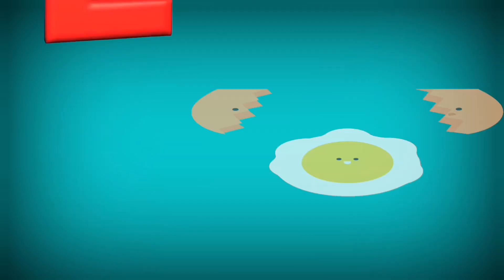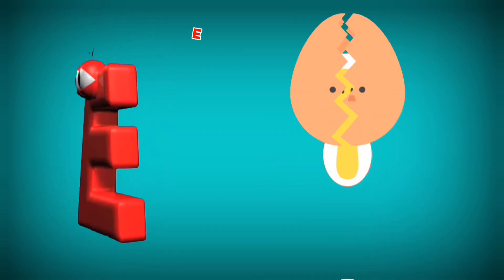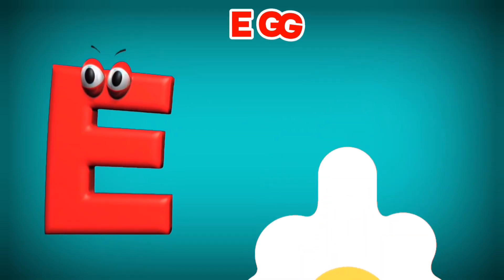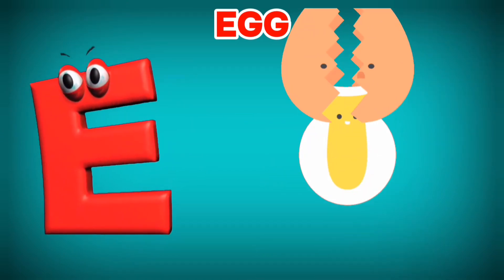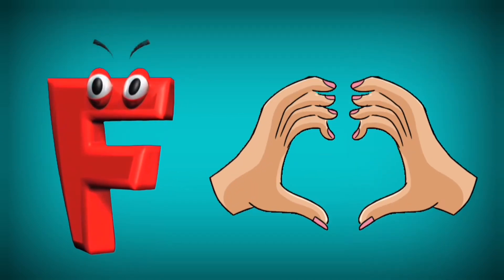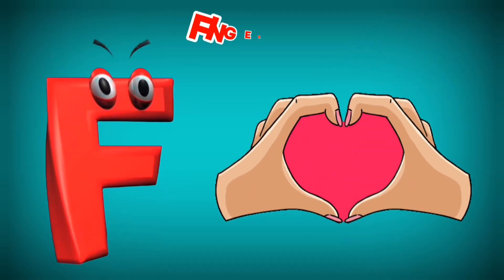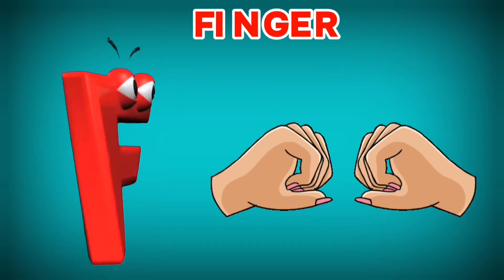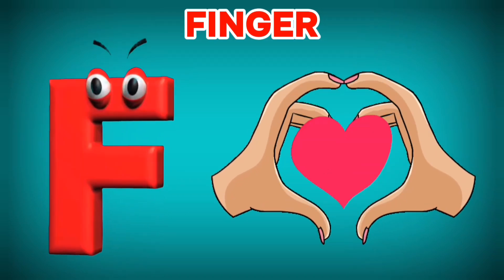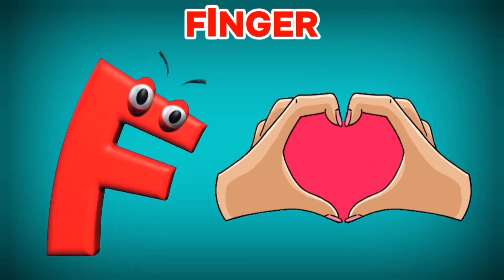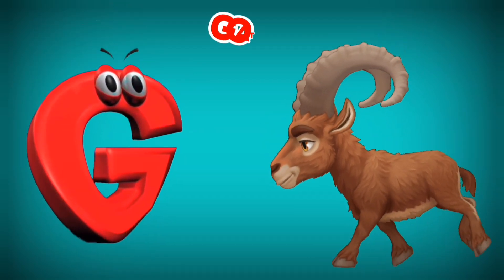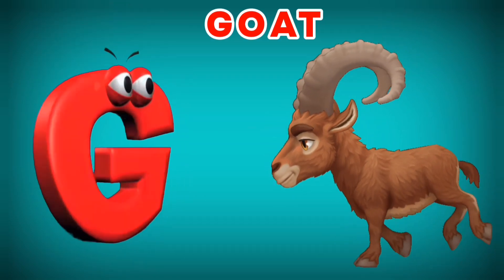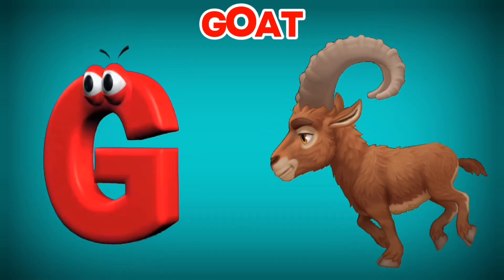D is for Dolphin. D, D. Dolphin. E is for Egg. E, E. Egg. F is for Finger. F, F. Finger. G is for Goat. G, G. Goat.